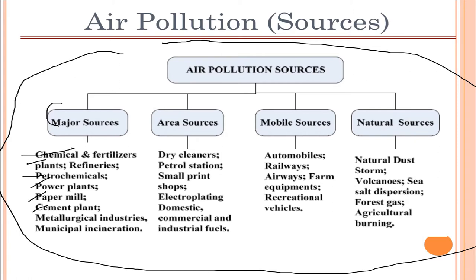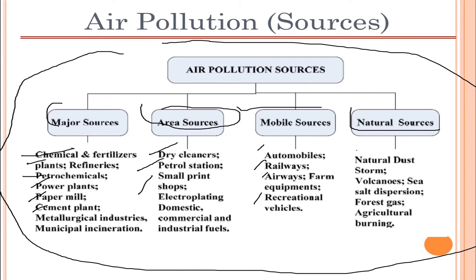Looking at more specific source categories: major point sources include chemical and fertilizer plants, refineries, petrochemicals, power plants, and cement mills. Area sources include dry cleaners, petrol stations, and small print shops. Mobile sources include automobiles, railway engines, airways, and recreational vehicles. Natural sources include dust storms, volcanic eruptions, sea soil dispersion, and forest gas burning.